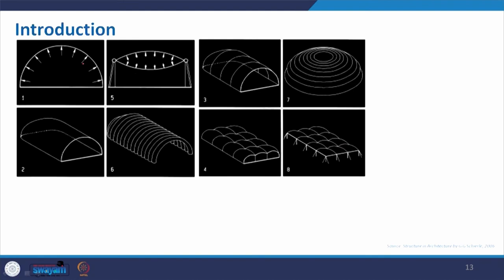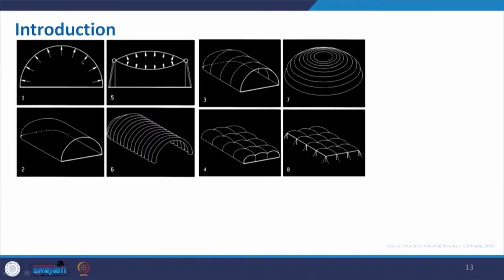Let us have a quick test on what we understand from air-inflated and air-supported structures. Here are some pictures numbered 1 to 8 randomly placed — let us identify which category each belongs to. The choices are only two: air-supported or air-inflated. Have a look and try to give an answer before the answers are revealed.